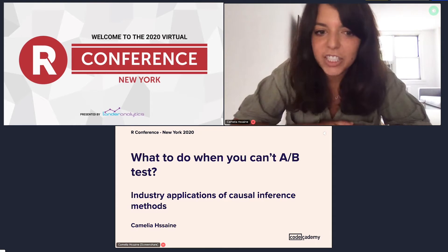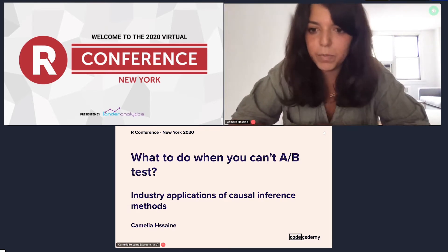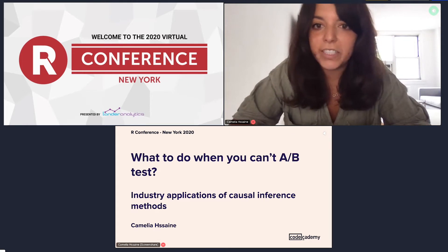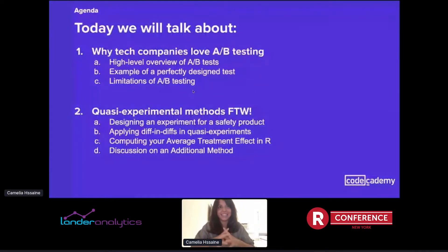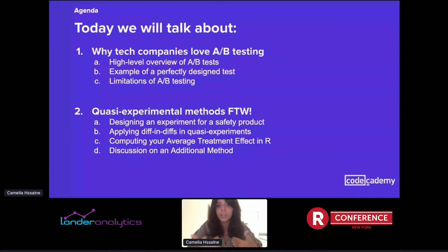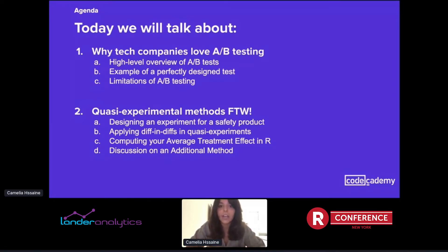Today we'll go over industry applications of causal inference methods — specifically methods that are prevalent in observational studies and that I've leveraged in my previous experience when A/B testing was just not on the table. We have a very packed agenda. I'll give a high-level overview of why tech companies love A/B testing, followed by an example of an A/B test we ran at Codecademy, then limitations of A/B testing, and the most important part: quasi-experimental methods for the win.